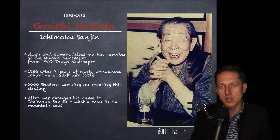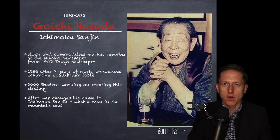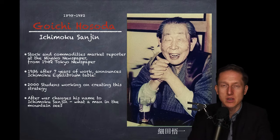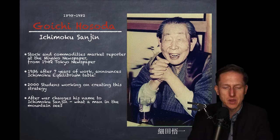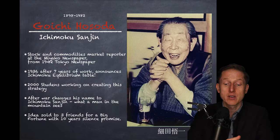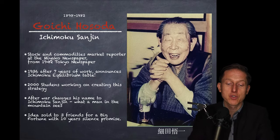After the war, he changed his name to Ichimoku Sanjin - meaning 'what a man in the mountains sees.' Ichimoku has clouds as well. Imagine you are high above in the mountains and you can see from above everything, even from above the clouds. You can see all the movements. That's what he could see using his charts, and that's what we can see these days as well.